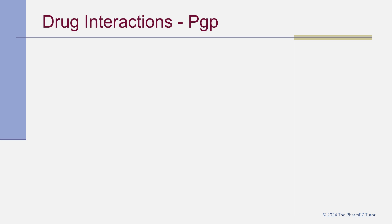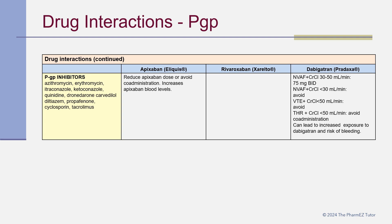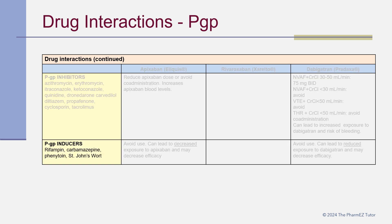Now let's discuss DOAC interactions involving only the PGP transport system. Pure PGP inhibitors include azithromycin, erythromycin, itraconazole, ketoconazole, quinidine, dronedarone, carvedilol, diltiazem, propafenone, cyclosporine, and tacrolimus. When used with these drugs, the apixaban dose should be reduced or avoided, and the dabigatran dose should be reduced or avoided depending on renal function. For PGP inducers — such as rifampin, carbamazepine, phenytoin, and St. John's wort — both apixaban and dabigatran should be avoided, as this can lead to reduced drug exposure and may decrease efficacy.